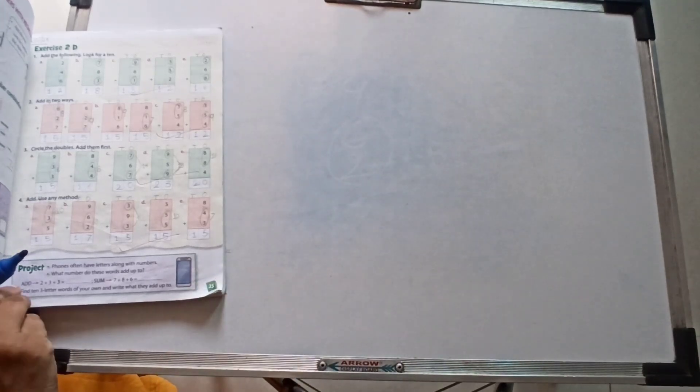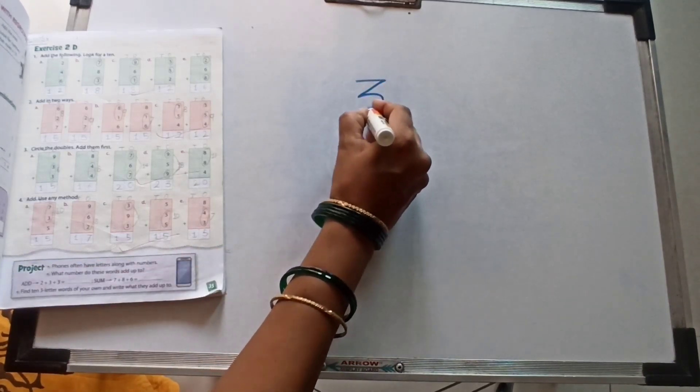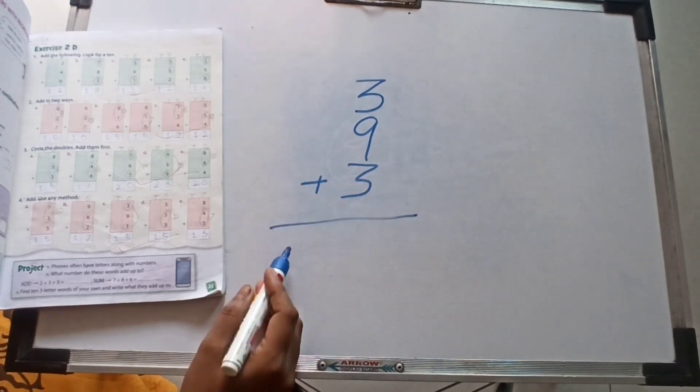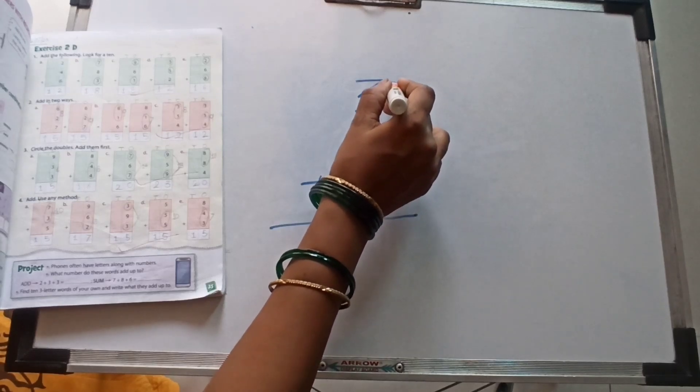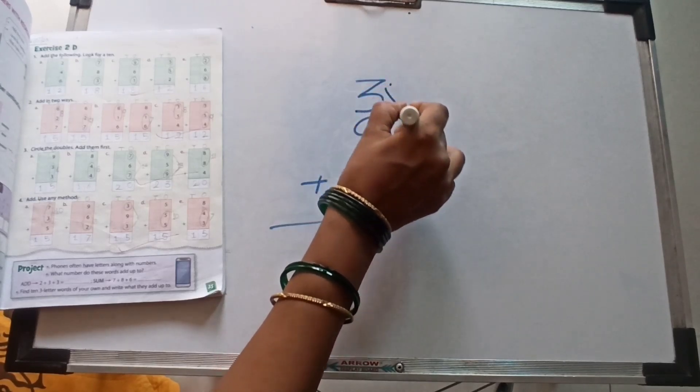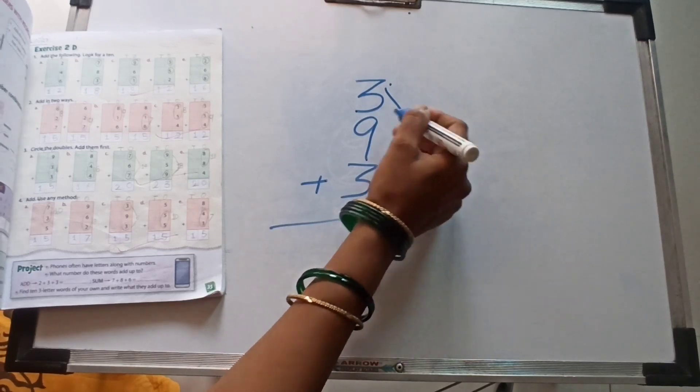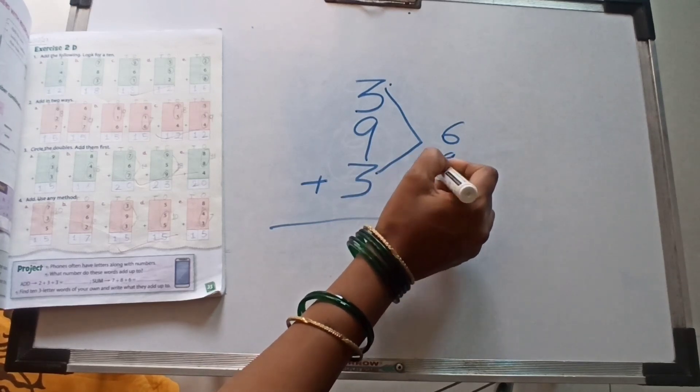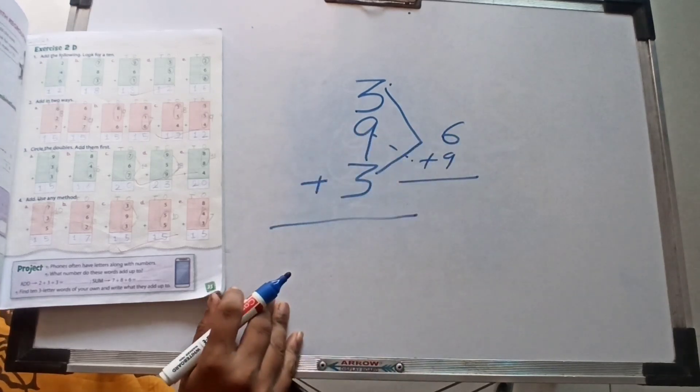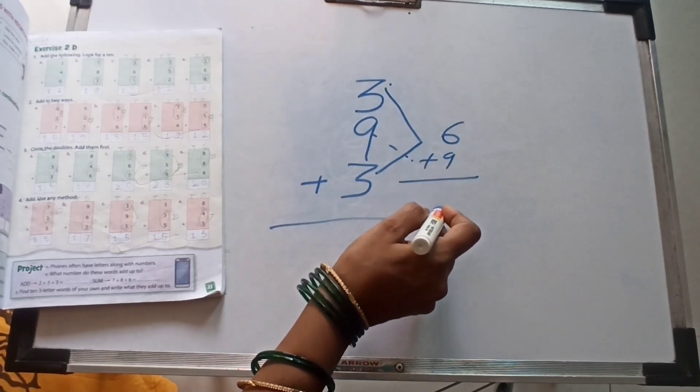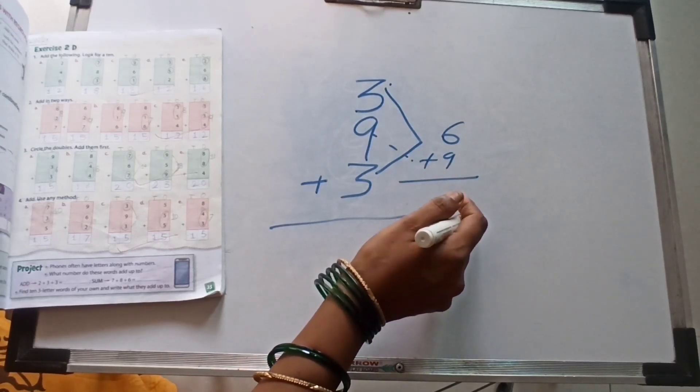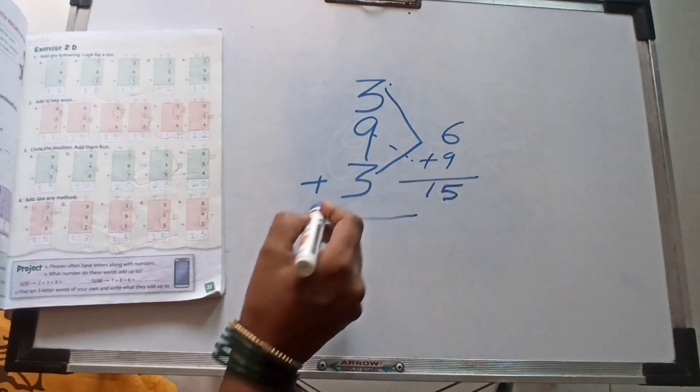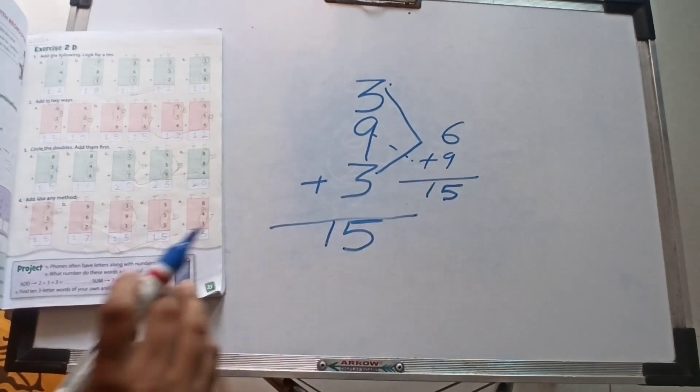Now 3 plus 9 plus 3. See, this one 3 and this one 3, same number. 3 twos are 6. 6 plus 9, this one 9. How many? We got answer, our 15. Finally our answer, 1 plus 15.